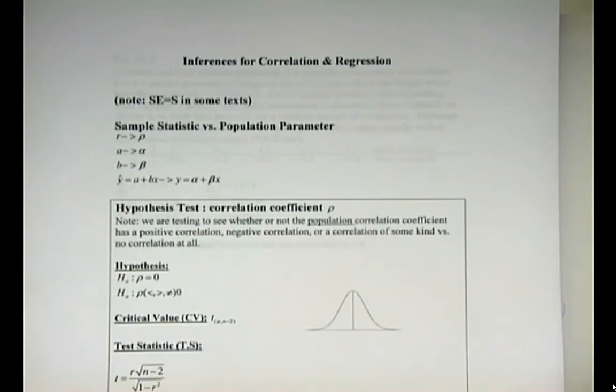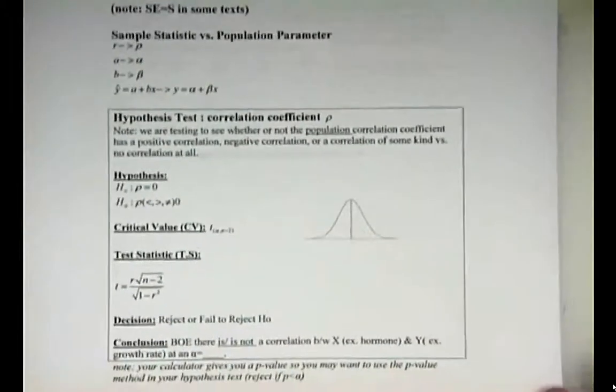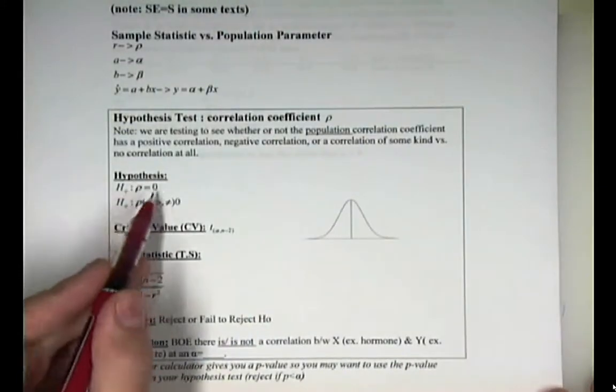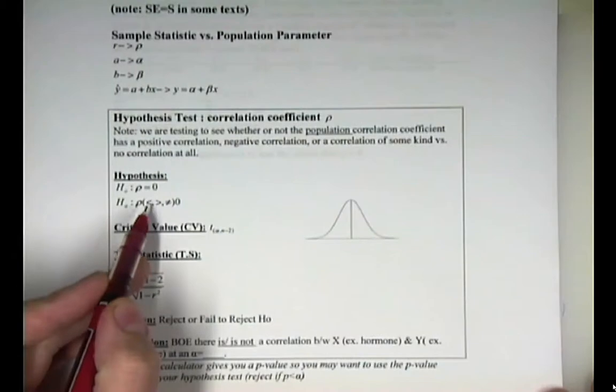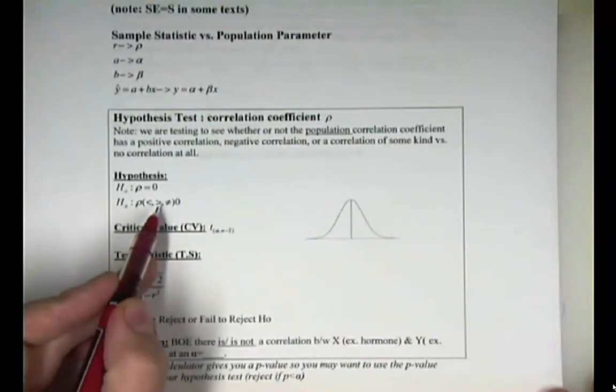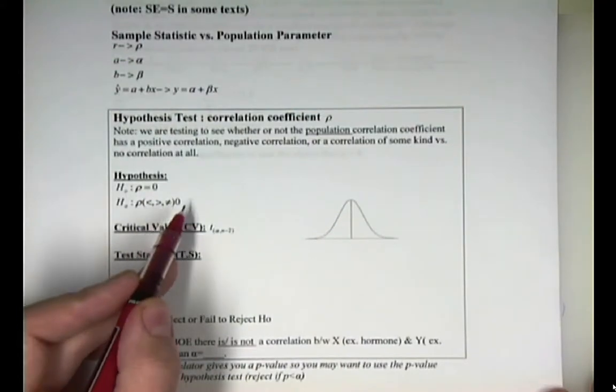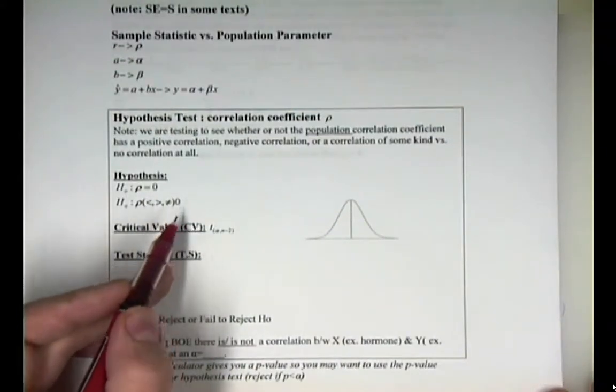So in hypothesis testing for correlation coefficient, we always set rho equal to zero, meaning there is no correlation. And then the alternative is less than zero, meaning there is a negative correlation, greater than zero, meaning there's a positive correlation, and not equal to zero means there's some kind of correlation going on, but we're not sure what.